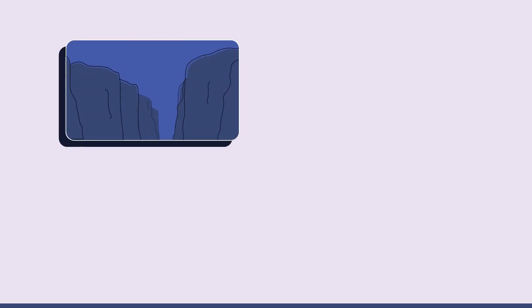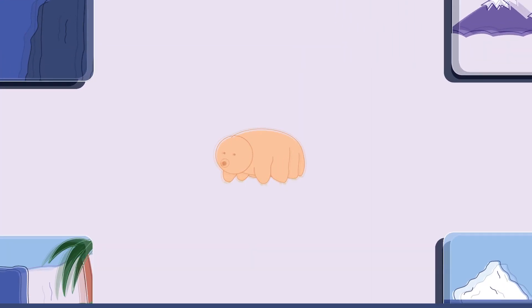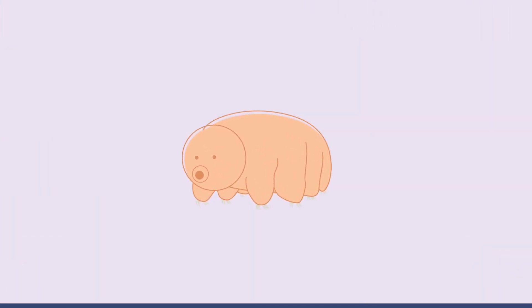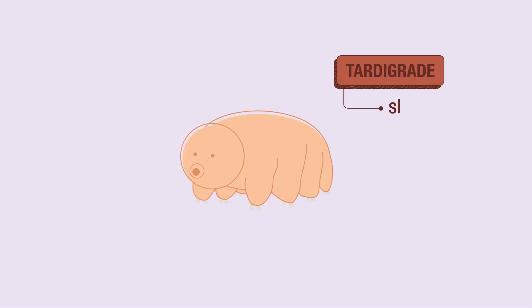Water bears live from the deepest ocean trenches to the tops of mountains, from tropical rainforests to the Antarctic. They're short and plump with four pairs of legs. They move slowly in a lumbering gait like a bear, which is why they're called water bears. Their scientific name is tardigrade, which means slow walker.